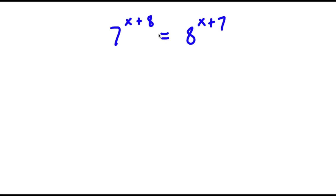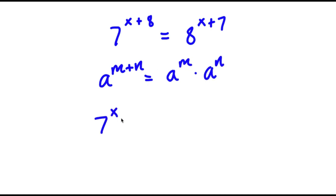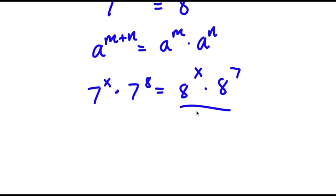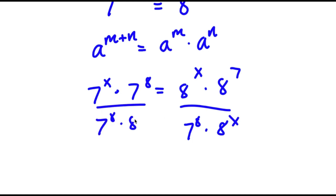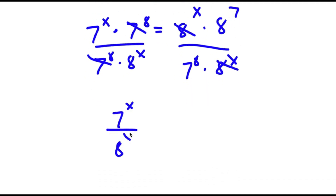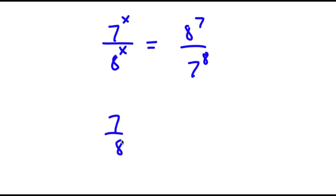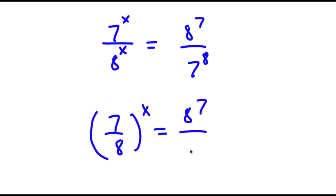In this problem, I have 7 to the power of x plus 8 is equal to 8 to the power of x plus 7. Using the property a to the power of m plus n equals a^m times a^n, I rewrite: 7^(x+8) becomes 7^x times 7^8, and 8^(x+7) becomes 8^x times 8^7. Now I divide both sides by 7^x times 8^x. These cancel and I get 7^x over 8^x equals 8^7 over 7^8, which is (7/8)^x equals 8^7 over 7^8.